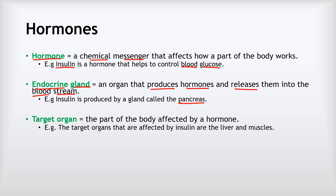Next, we have the idea of a target organ. A target organ is the part of the body that is affected by a particular hormone, and different hormones will have different target organs. Continuing with our insulin example, the target organs of insulin are the liver and muscles. That means that they are the organs that are affected by the insulin.